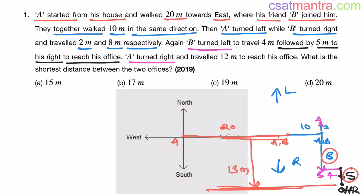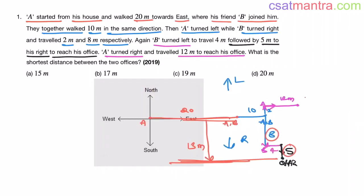Now A turned right. A is here now. So turned right in this direction, traveled 12 meters to reach his office. In this direction he traveled 12 meters. So we have A's office here.